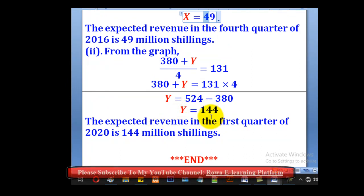Remember it is in millions of shillings. Expected revenue for the first quarter of 2020 is 144 million shillings.